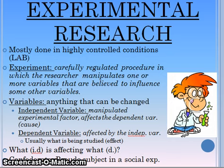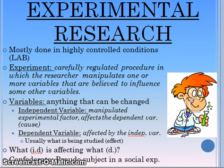You can have multiple independent variables but you usually only have one dependent variable. In experimental research you usually ask the question: what — which is the IV — is affecting what.